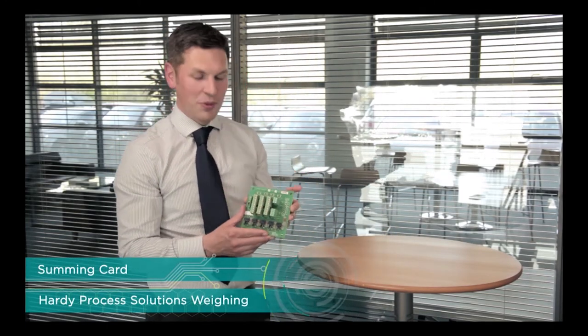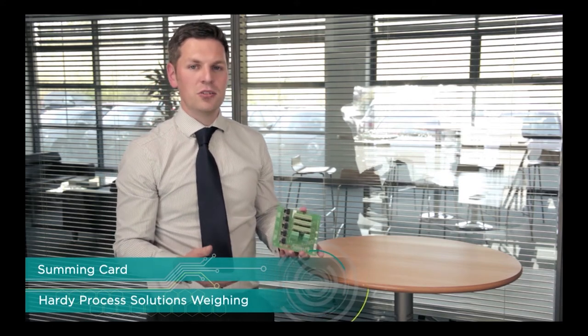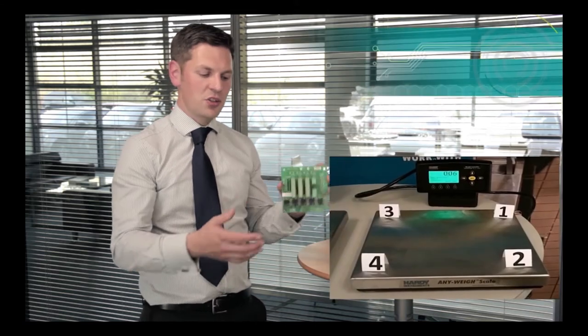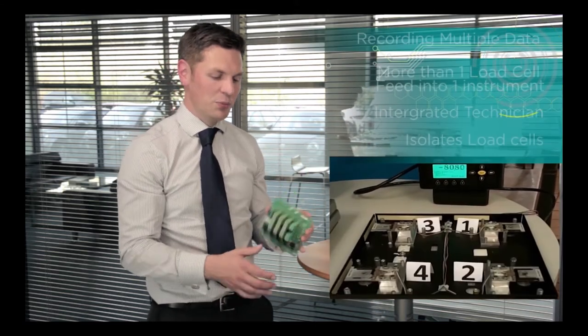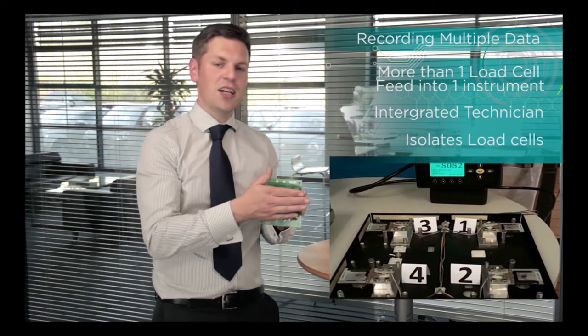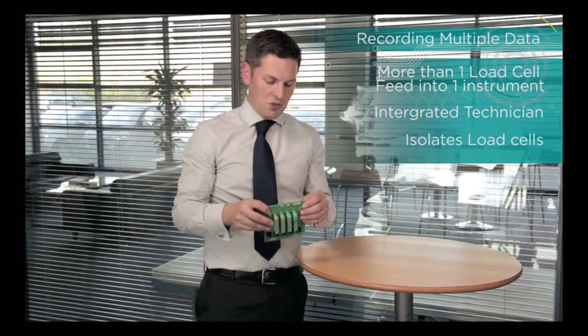This product here is a Summing card. Hardy make a range of these and they're generally used where you've got more than one load cell fed into the same instrument. You might have that if you're recording weights from a vessel or a tank that's got three or four legs on it with a load cell on each of those. You feed that into this and then that would go off to the instrument afterwards.